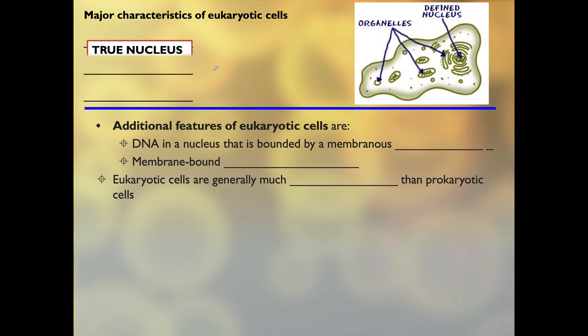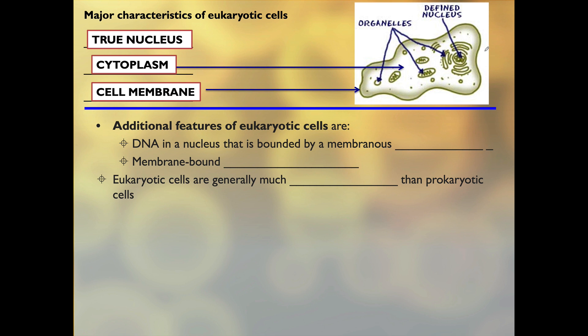Switching to eukaryotic cells, they do have a true nucleus — and a true nucleus has a membrane around it. They also have cytoplasm and a cell membrane, just like prokaryotes. But some additional features that make a eukaryote a eukaryote: the nucleus has a membrane, and there are membrane-bound organelles — you can see these in the diagram, various structures made of membrane. Eukaryotic cells are generally much larger than prokaryotic cells.